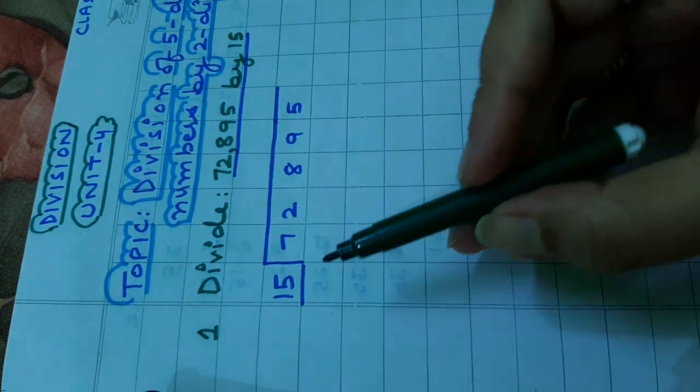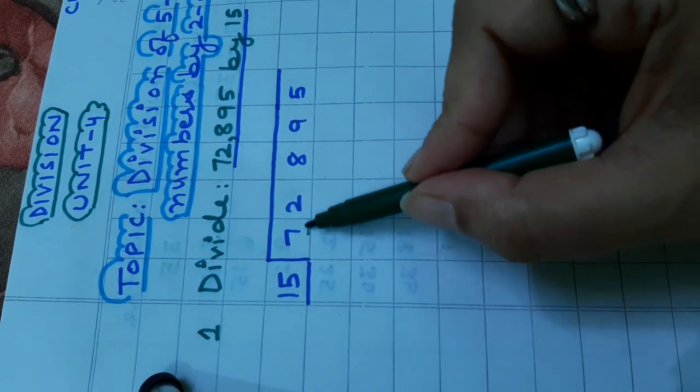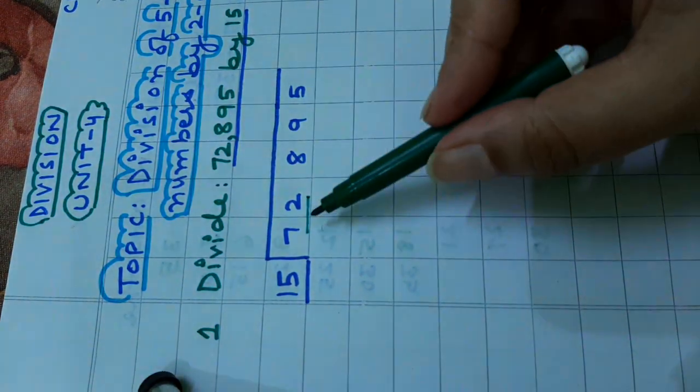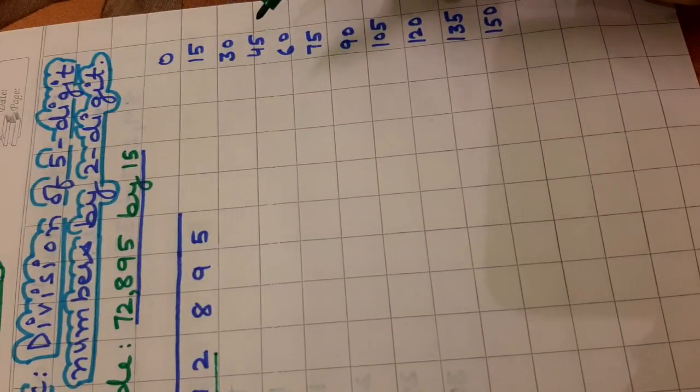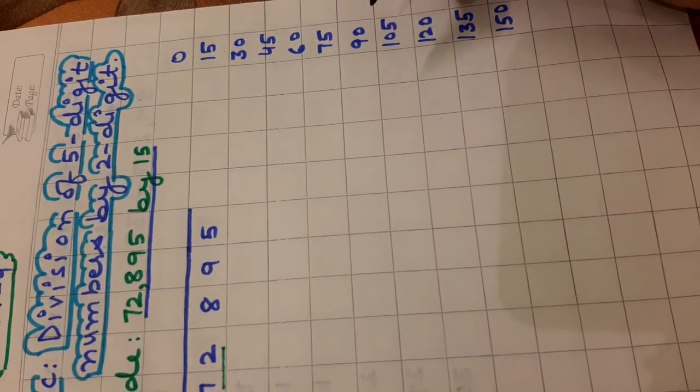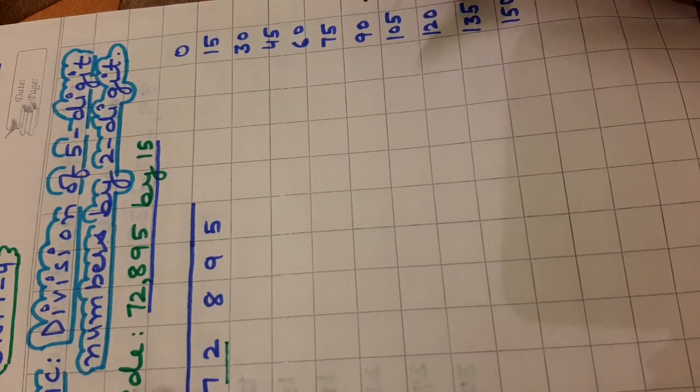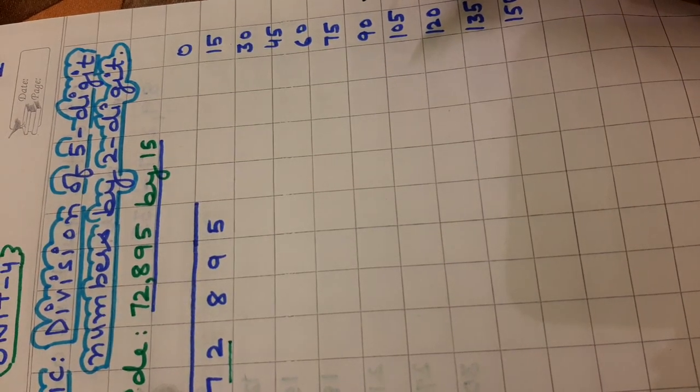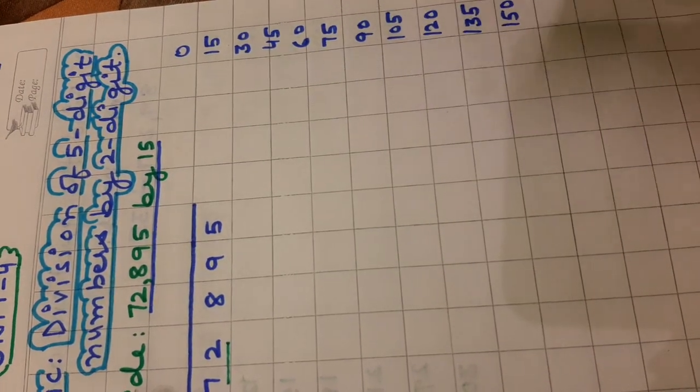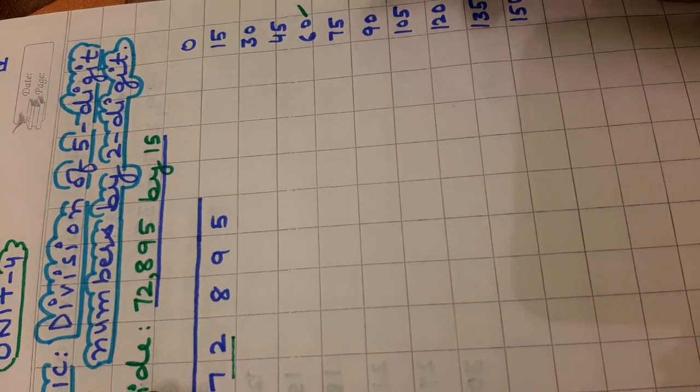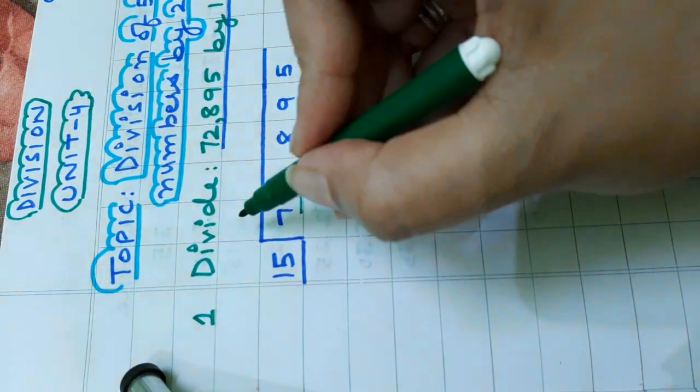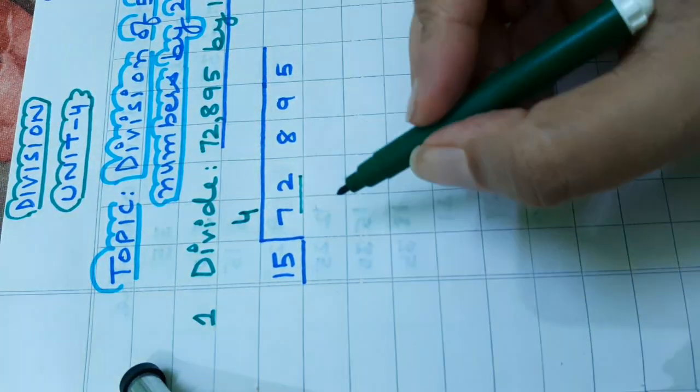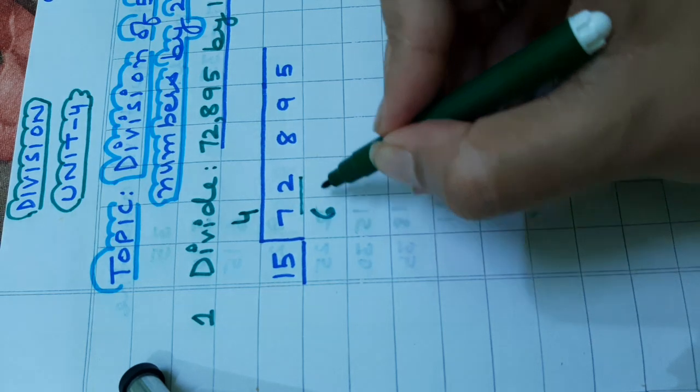As 15 is a 2-digit number, so we will start with the 2 digits. We will take 72. Now we will find in the table of 15, the number equal to 72 or a number less than or nearer to 72. And that number is 60. 15 fours are 60. Write 4 at quotient place and 60 here.